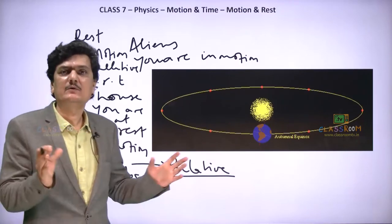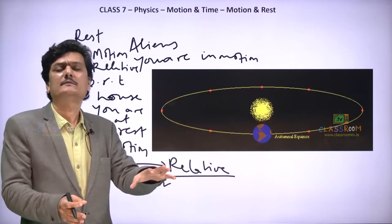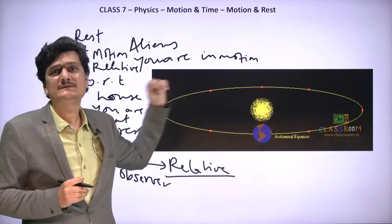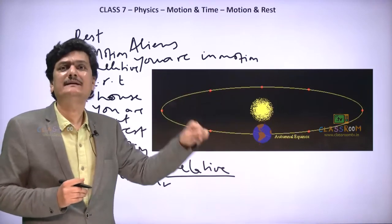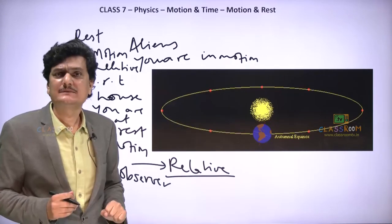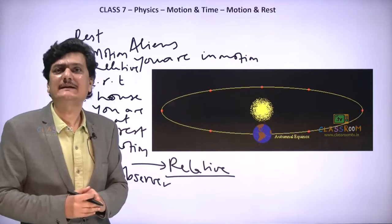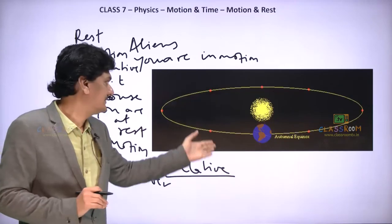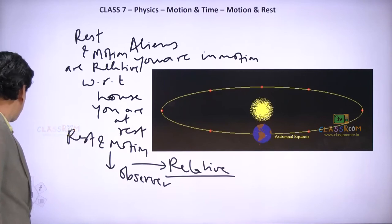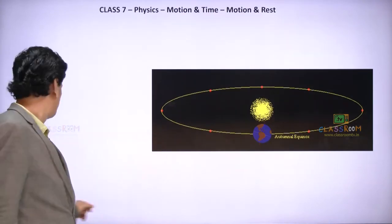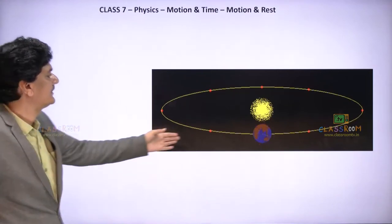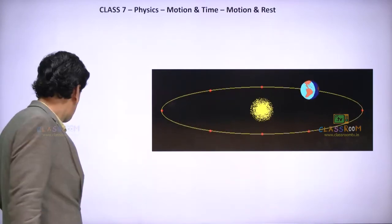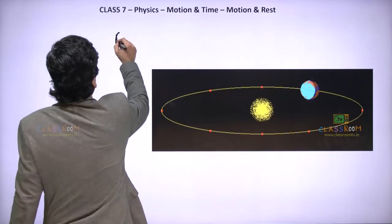If the observer changes, if the surrounding changes, then the same object can be at rest for one observer but not for another — like you say you are at rest, but the aliens say you are not. Both of you are correct. You are at rest and also moving. Therefore, rest and motion are called relative. Any surrounding is also called a frame of reference.